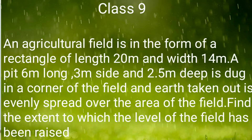An agricultural field is in the form of a rectangle of length 20 meters and width 14 meters. A pit 6 meters long, 3 meters wide and 2.5 meters deep is dug in a corner of the field, and the earth taken out of the pit is spread uniformly over the remaining area of the field. Find the extent to which the level of the field has been raised.